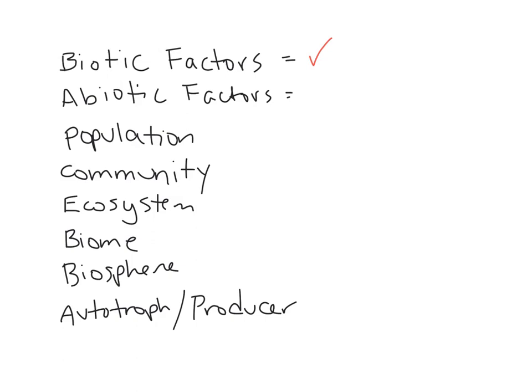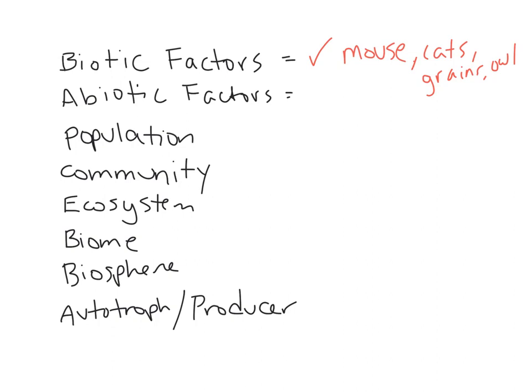For example, for a mouse living in Tulare, what are some living things that would affect it? Well, that mouse would be affected by cats, by whatever they eat like the grass and grains. They'll also be affected by owls, because owls can eat the mice. So cats, grains, owls — these are all biotic factors that will affect a mouse.